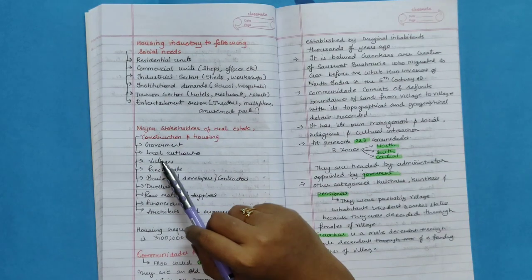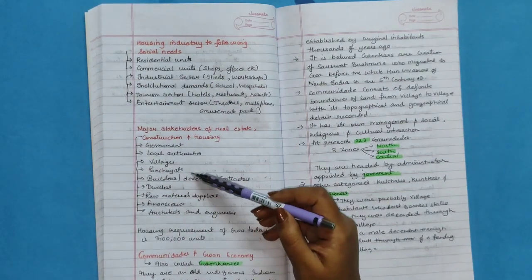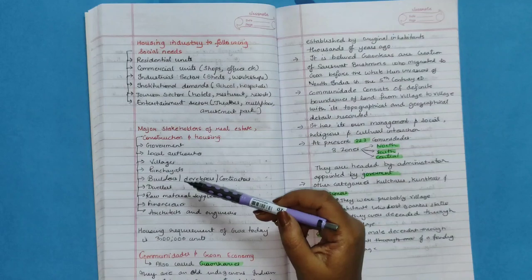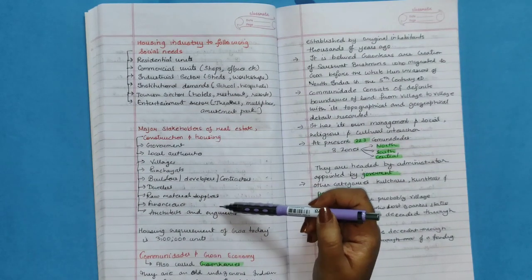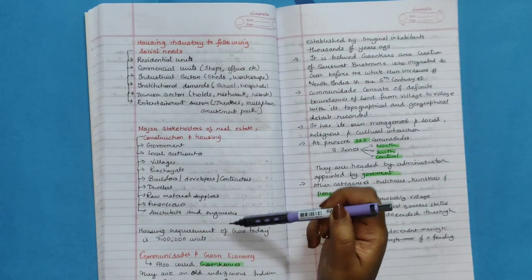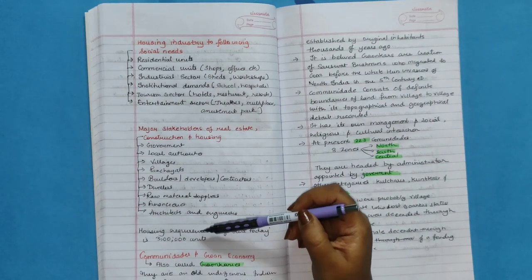Major stakeholders of real estate, construction and housing: government, local authorities, village panchayats, builders, developers or contractors, dwellers, raw material suppliers, financers, architects and engineers. Housing requirement of Goa today is 3 lakh unit.